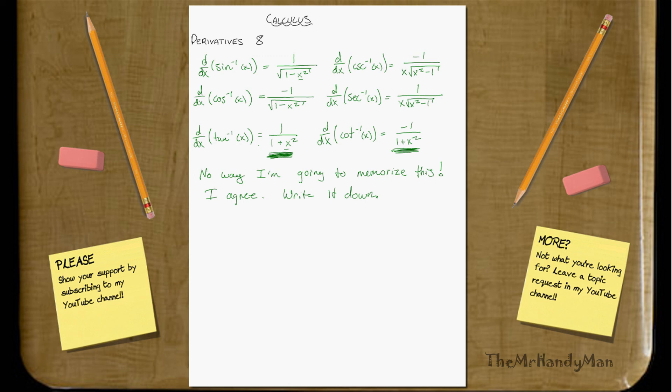So, you know, anything that works for you, if you have to just notice the patterns between the cosines and the sine functions or the tangents, notice how they're similar just by a negative, do whatever you've got to do to memorize them.